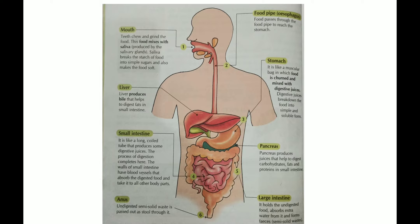Starting from the mouth, the different organs of the digestive system are: mouth, then food pipe or esophagus, then stomach, liver, pancreas, small intestine, large intestine, and anus.